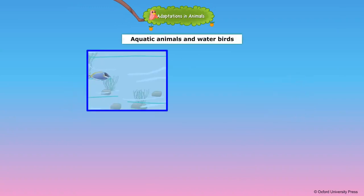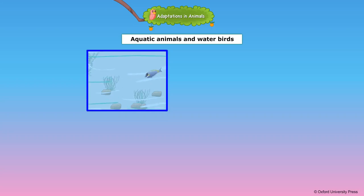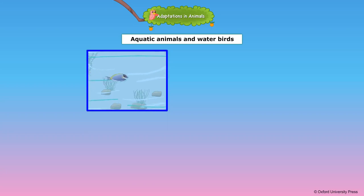The boat-shaped body of the fish enables it to move through water. It has fins and a tail. A fin helps the fish to swim and the tail helps it to change direction.